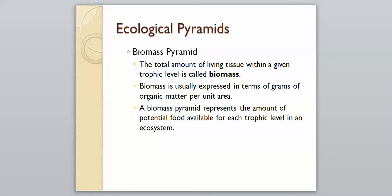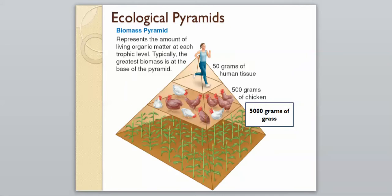Our next type of pyramid is a biomass pyramid. The total amount of living tissue within a given trophic level is called biomass. It's usually expressed in terms of grams of organic matter per unit area. A biomass pyramid represents the amount of potential food available for each trophic level in an ecosystem. It shows the total amount, how much there actually is at each level. We have 5,000 grams of grass, 500 grams of chicken, and only 50 grams of human tissue by the time we make it up. The greatest amount is always at the bottom, where there's always the most energy available.